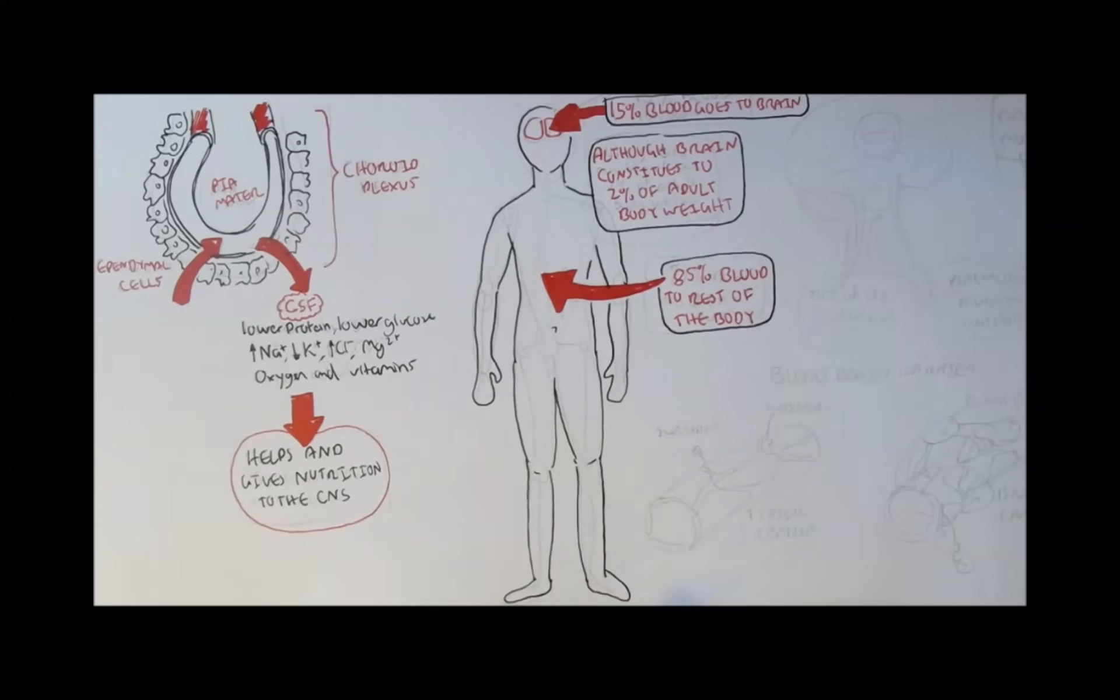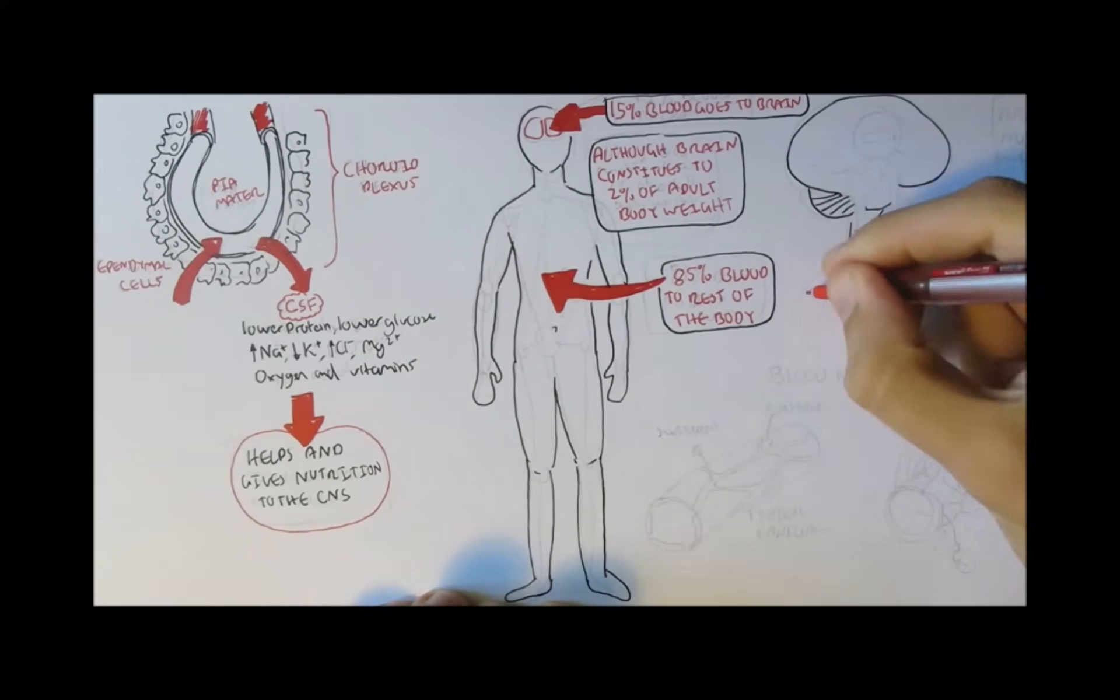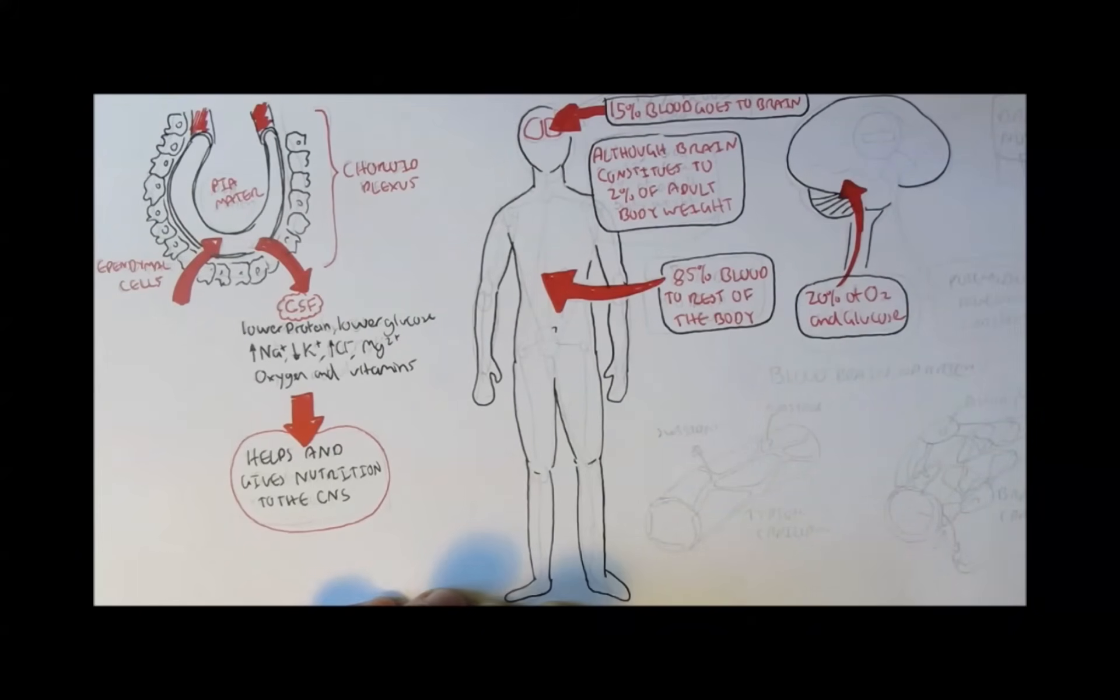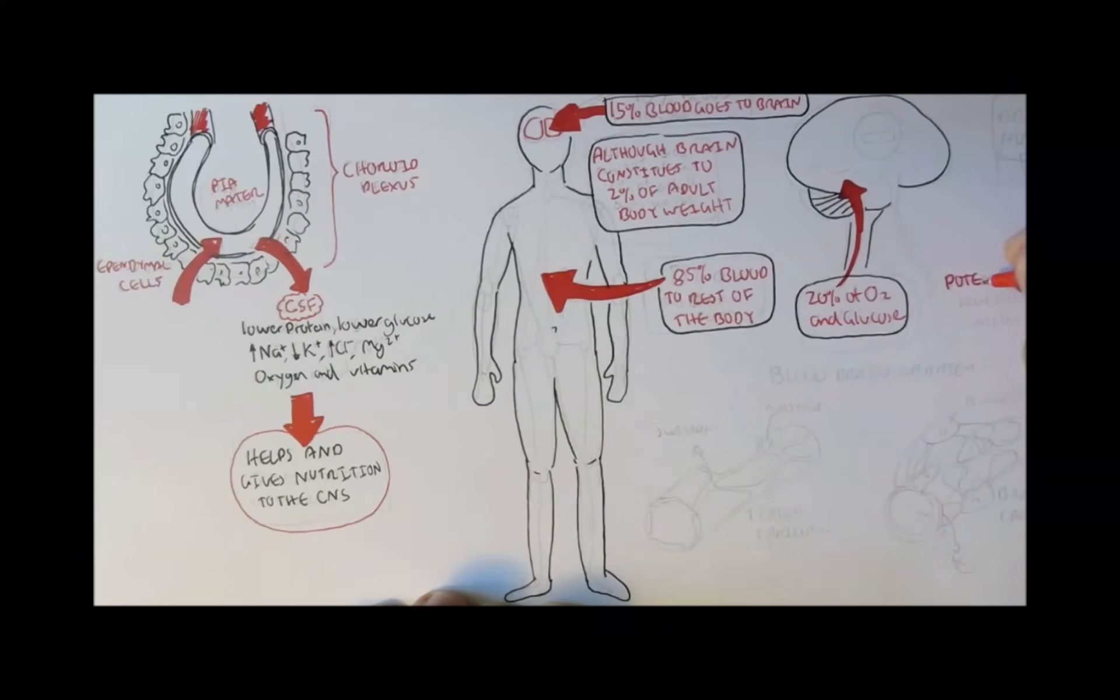For such a small thing, it requires a lot of nutrients. The brain is the main control system in the body, and so requires a lot of nourishment. 20% of oxygen and glucose consumed by the body is fed to the brain.